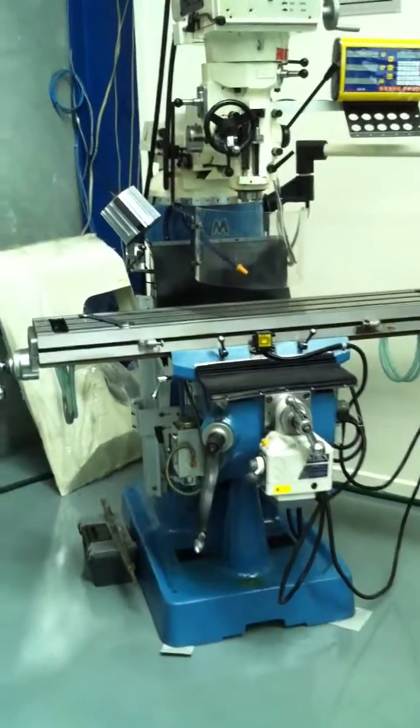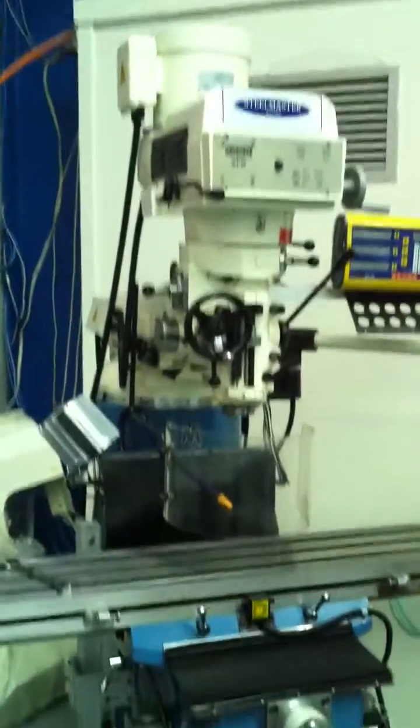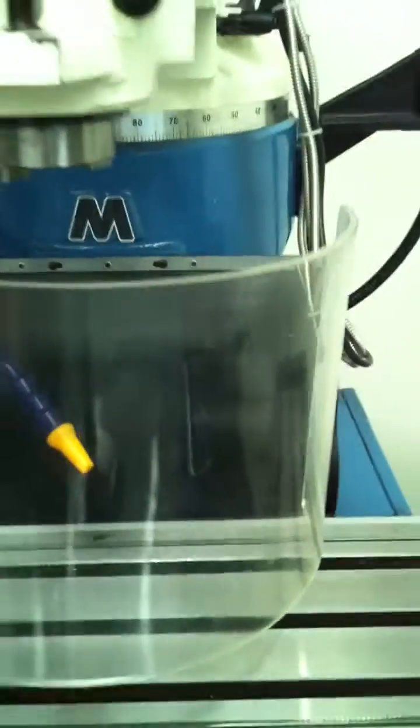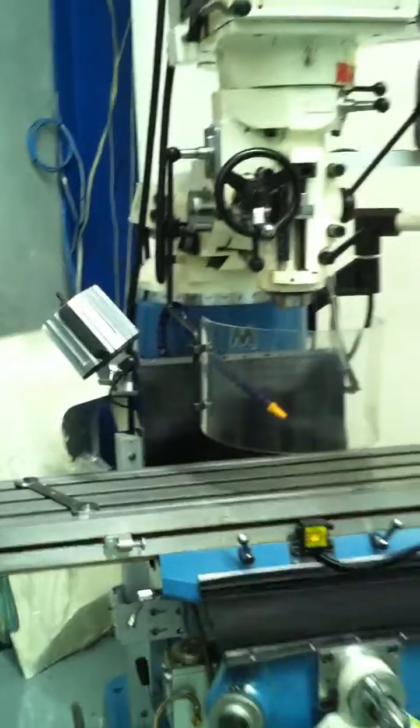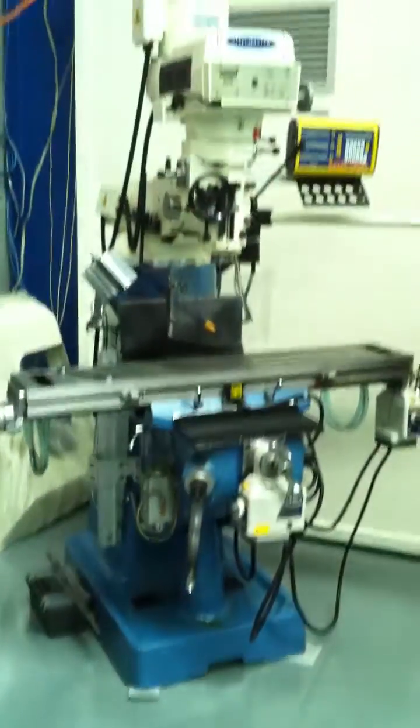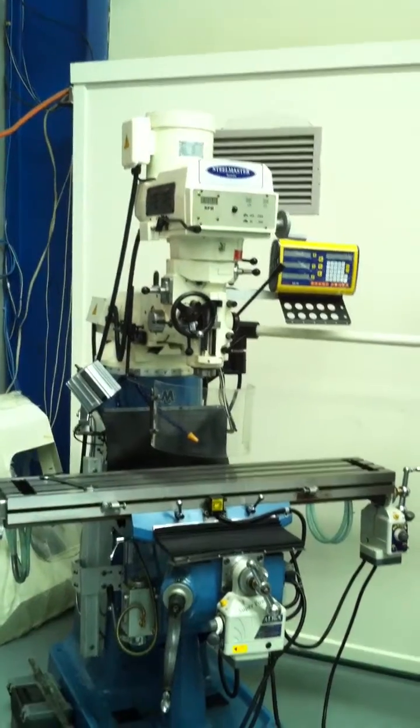We run a full Taiwanese running system on the head and also Meehanite castings as you can see there behind our safety interlock guard. Meehanite being the finest quality in castings is our standard preferred body on our turret milling machines.